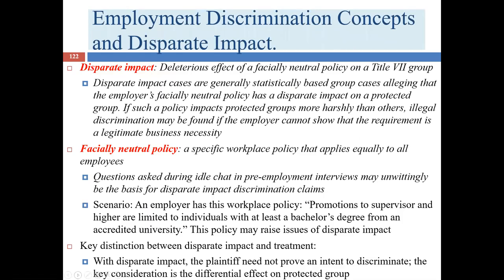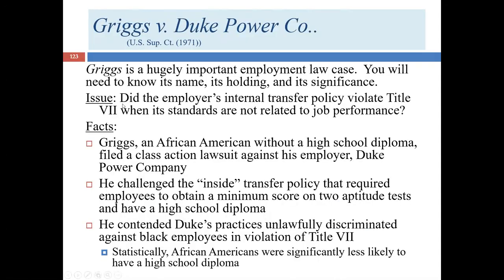We touched on this at the end of lecture two, so we're going to move forward to the Griggs case. As you can see by the date, it's pretty old — it was the first statistical case we saw. Remember that Title VII passed in 1964, so this is only seven years after the creation of that law. Cases take a few years to go from a discriminatory event to trial to appeal and then to the U.S. Supreme Court, so this fact pattern probably developed in the mid to late 1960s.